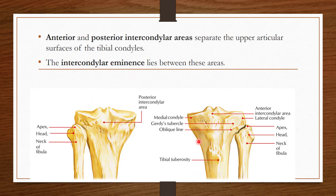At the upper end of the tibia there are two condyles: the medial condyle and the lateral condyle. In between the two condyles, there is an intercondylar area — the anterior intercondylar area from the anterior side and the posterior intercondylar area from the posterior side. Between these two intercondylar areas there is one eminence called the intercondylar eminence.